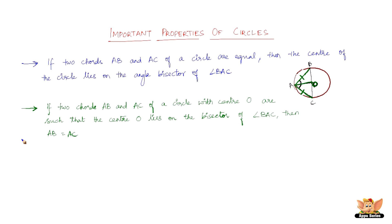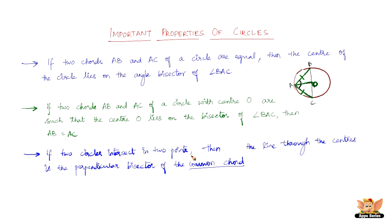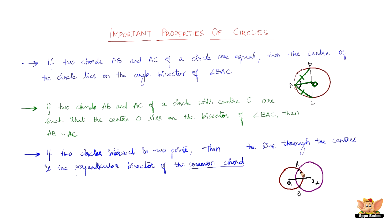Another property: if two circles intersect at two points, then the line through the centers is the perpendicular bisector of the common chord. Consider two intersecting circles meeting at points A and B. The centers of these circles, O1 and O2, are such that the line through O1 and O2 is a perpendicular bisector of the common chord AB.